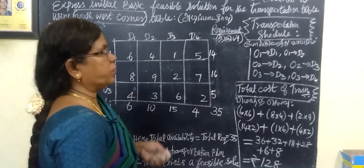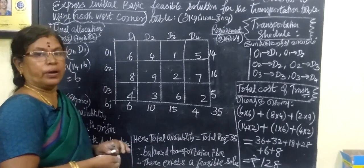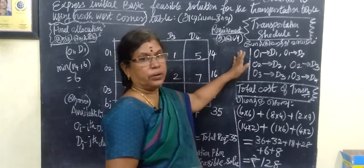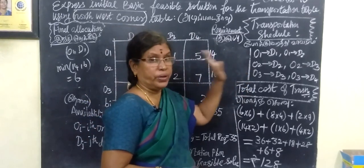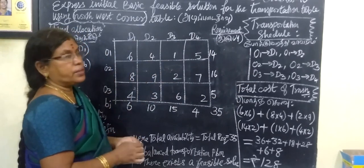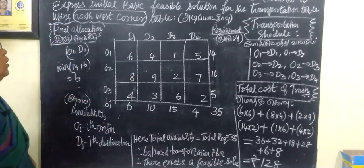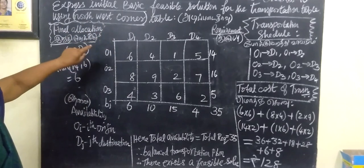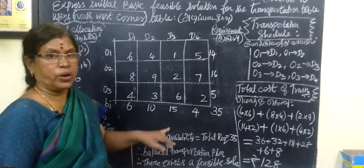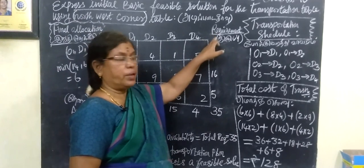Good evening students. We want to see exercise example 10.2, and this is for 12th grade business math. We need to find the feasible solution for the transportation table using the Northwest Corner method. This is the given table. We find the first, second, third, and final allocations. Before starting, you want to confirm that the total value of availability and the requirement should be the same.